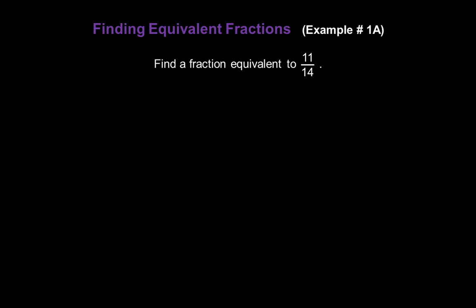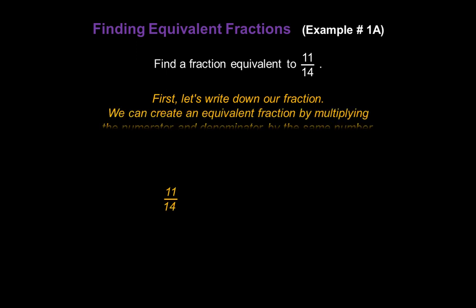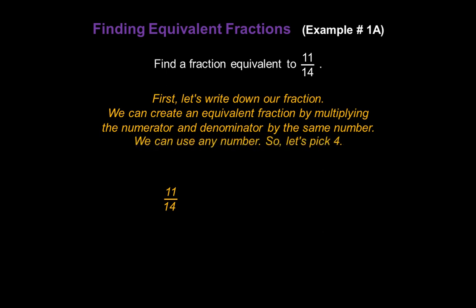Now let's do a couple of examples. Let's find a fraction equivalent to eleven fourteenths. We can create an equivalent fraction by multiplying the numerator and denominator by the same number — I'll pick four for this example. So we're going to multiply the top by four and the bottom by four. That gives us eleven times four in the numerator and fourteen times four in the denominator. Eleven times four is forty-four, and fourteen times four is fifty-six. So forty-four over fifty-six is equivalent to eleven over fourteen.